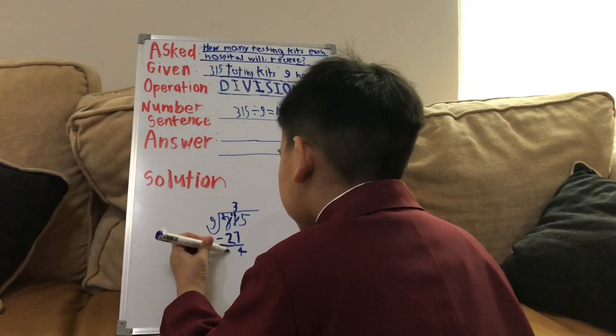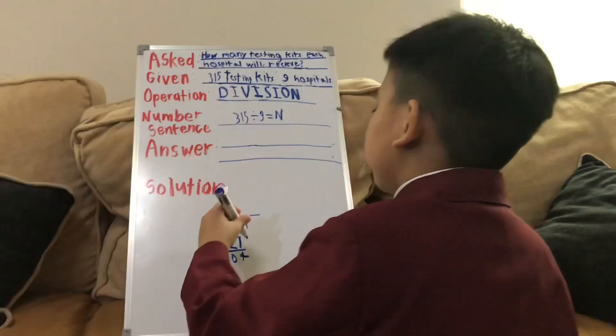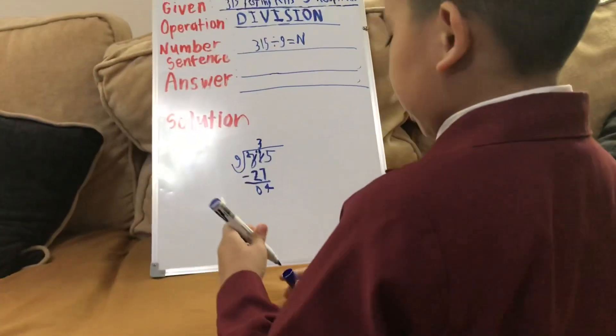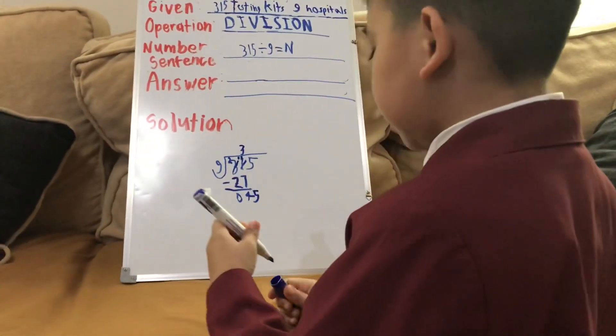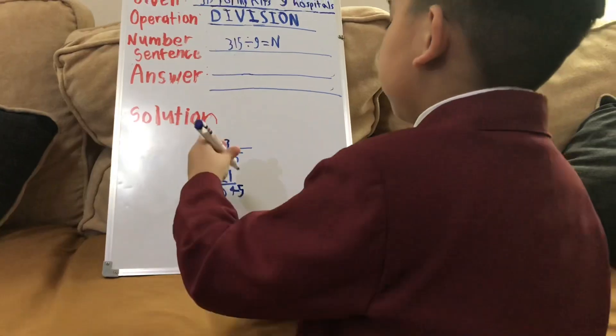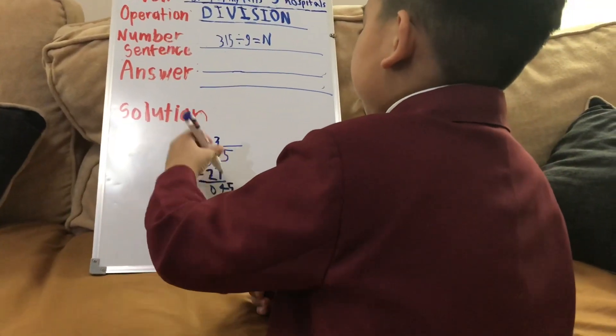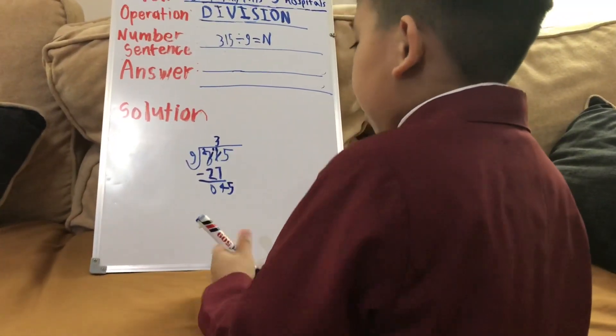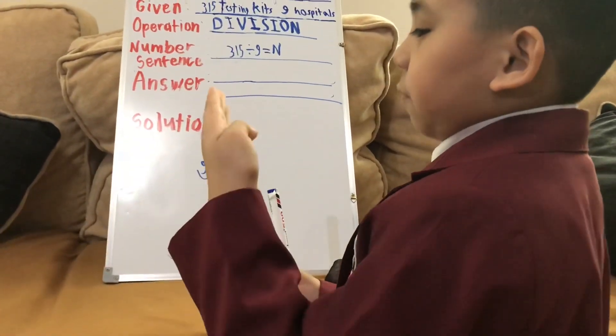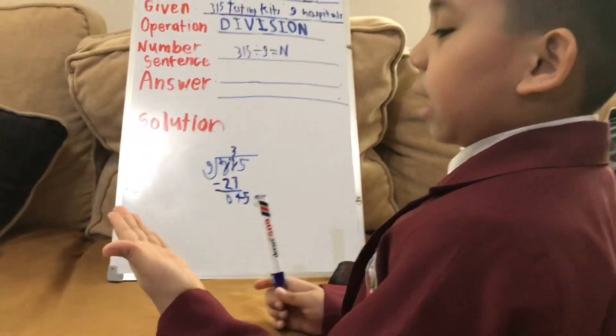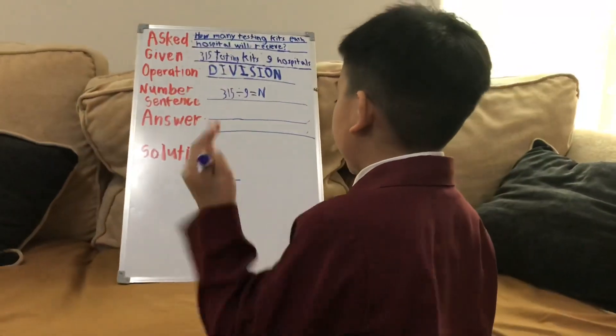And now, there is 0. So, 4 divided by 9. It cannot be. So, we have to put the 5 down. Now, we are left with 45. We have to put 45 divided by 9. Let's count. 9, 18, 27, 36, 45. We can. Now, we have to put the 5 here.